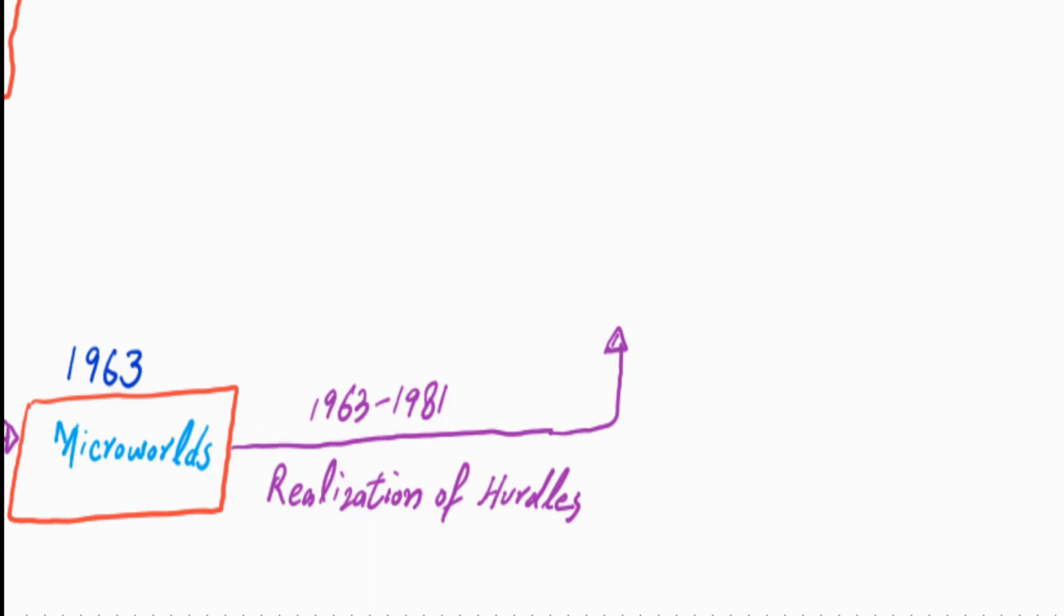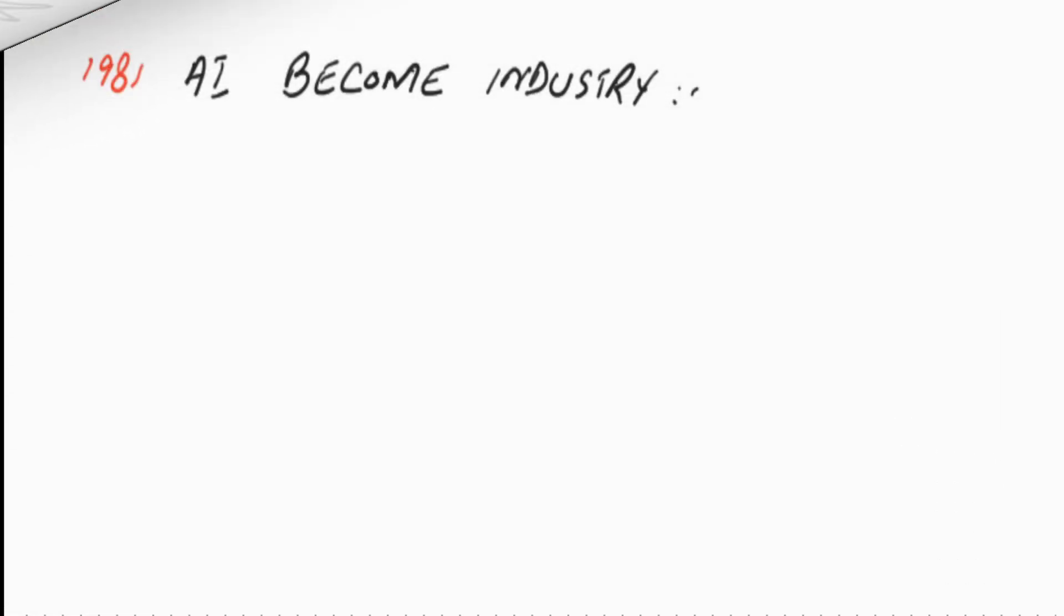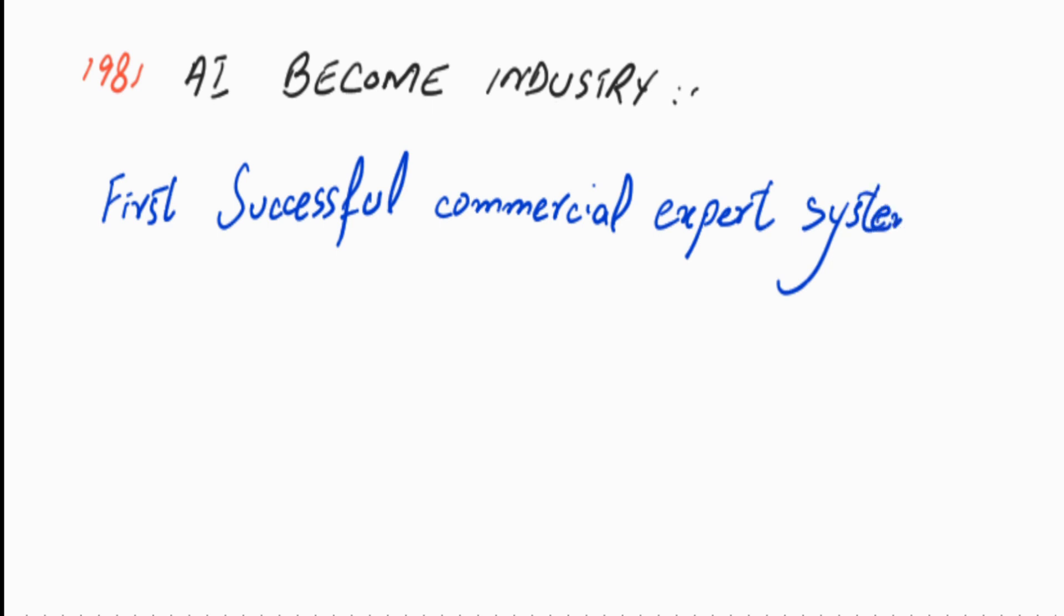Researchers went on exploring grounds and techniques, and later on artificial intelligence became part of the commercial market. In 1981, the first successful commercial expert system, R1, began operation at Digital Equipment Corporation.